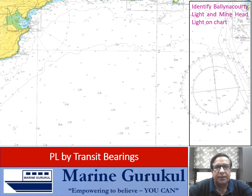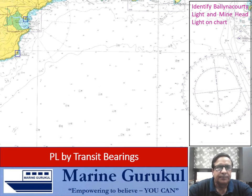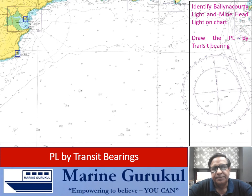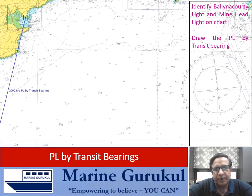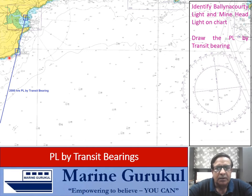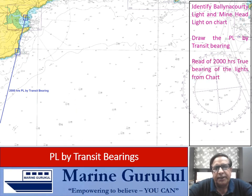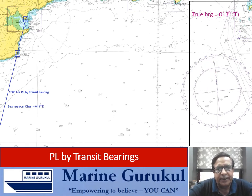First, identify Ballycotton light and Mine Head light on the chart. We then draw the PL by transit bearing — joining the two landmarks and extending them on the side where the ship is likely to be — and that becomes the 2000 hours PL. Using the parallel ruler, we transfer this line to the compass rose and read off the true bearing. The true bearing of Mine Head and Ballycotton (which is the same) is 013° true.